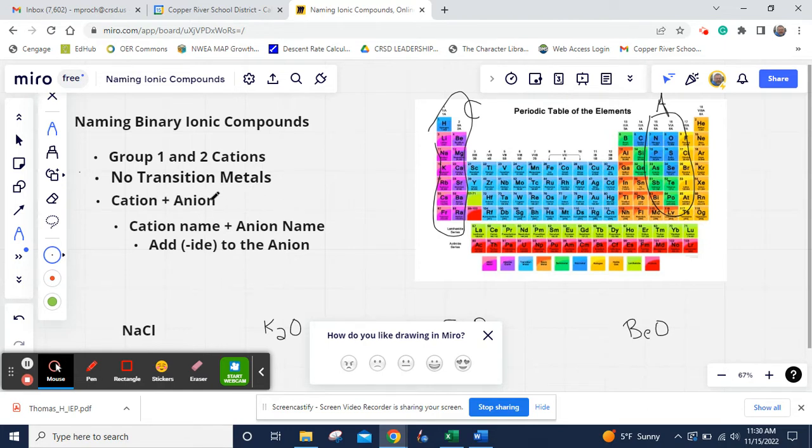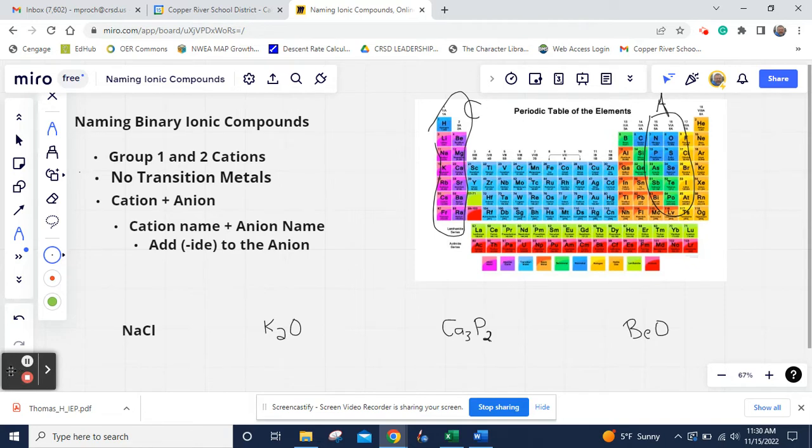Remember, it's just a cation plus an anion. How you name them is you take the cation name or the element name and you add it to the anion name. To the anion name, you then add the suffix IDE.